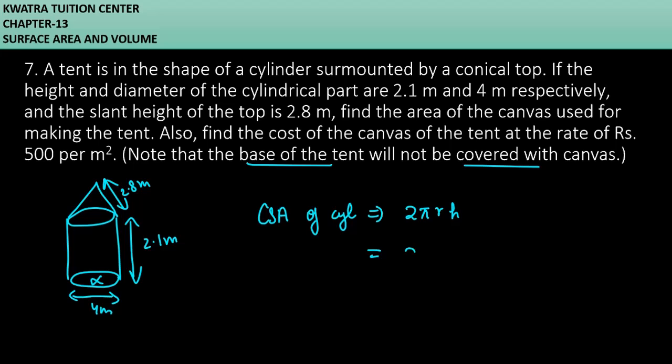We will leave π terms so that our calculation will be easy. How much r is given here? It is 2. How much height is? 2.1. So finally, how much answer will you get? 8.4πm².